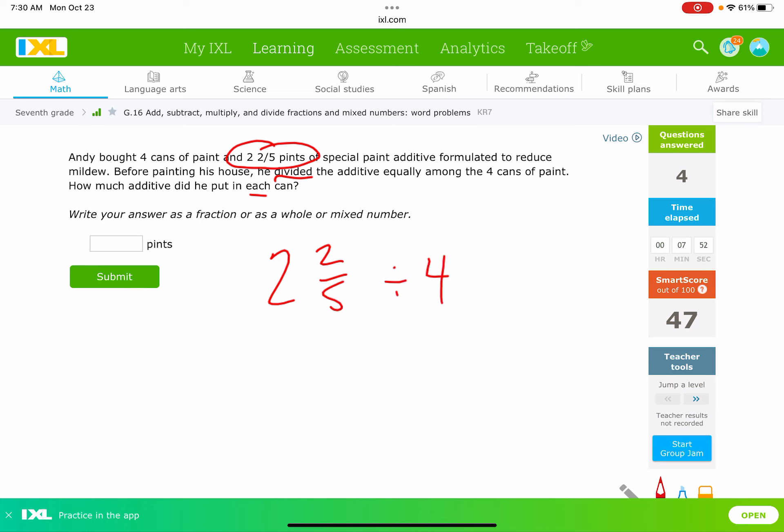We're going to make the 2⅖ an improper fraction. So, 2 is 10⁄5, plus the ⅖ more. So, we have 12⁄5. And remember, you can do that by doing 5 times 2 is 10, plus 2 is 12, 12⁄5. So, we're going to do keep, change, flip. I kept the first fraction. I'm going to change division to multiplication, and then instead of the second fraction being 4 over 1, I'm multiplying by ¼, because dividing by 4 and multiplying by ¼ are the same thing. So, I'm going to multiply straight across. 12 times 1 is 12. 5 times 4 is 20. My answer is 12 over 20.